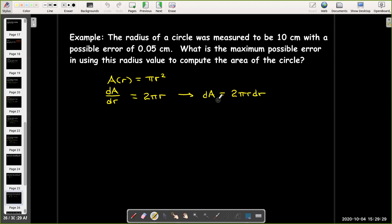All right, so now changing to differentials, that would say dA is 2 pi r dr. And given that dr is 0.05, that's our error.